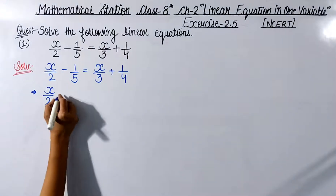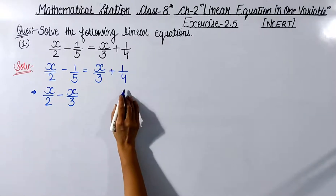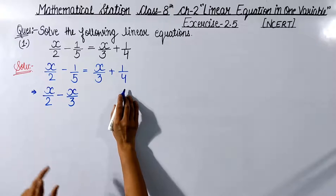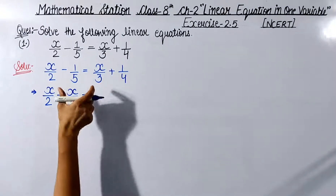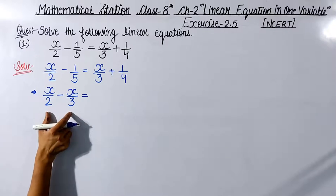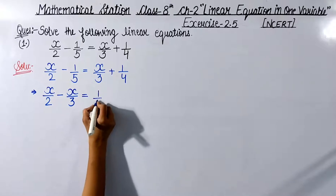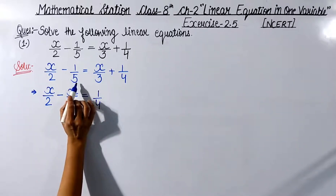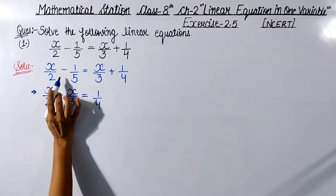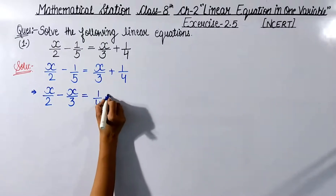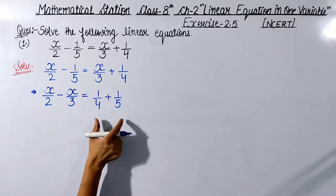Since x upon 3 on the RHS had a plus sign, it becomes minus x upon 3 on the LHS. The constant term 1 upon 4 remains on the RHS. All variable terms are now shifted to the LHS. The constant term minus 1 upon 5 from the LHS transfers to the RHS as plus 1 upon 5. So we have: x upon 2 minus x upon 3 equals 1 upon 4 plus 1 upon 5.